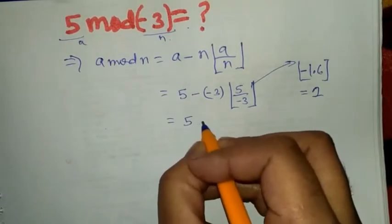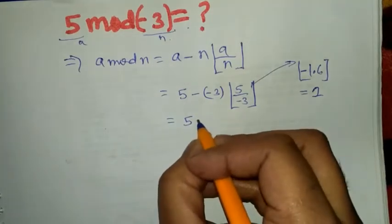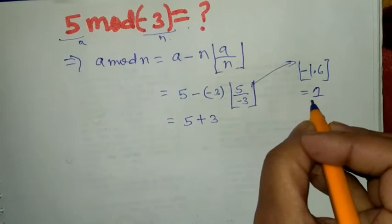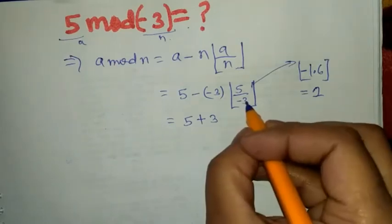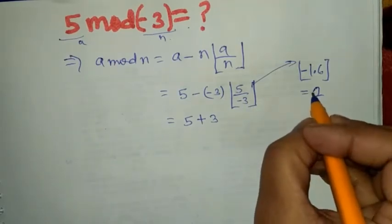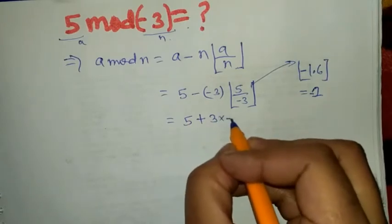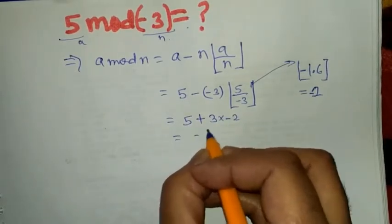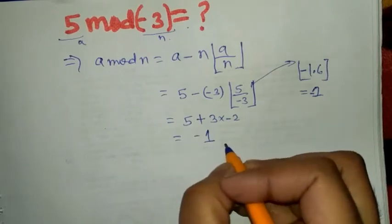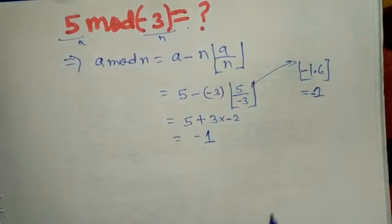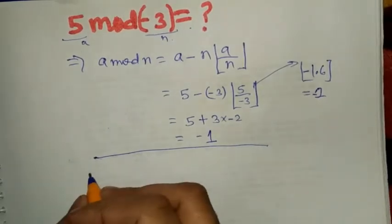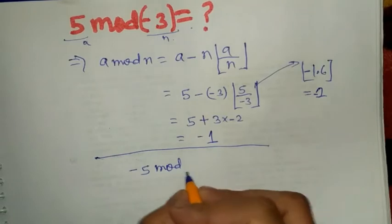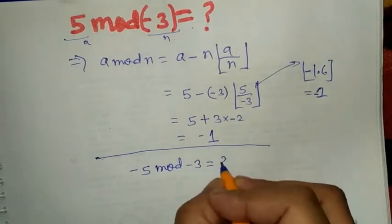So we put here 5 minus, and minus times minus will be plus, so 5 plus 3 times minus 2. This will be minus 1. Let's do one more example: minus 5 mod minus 3.